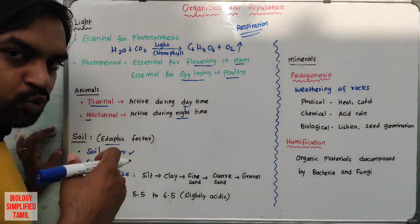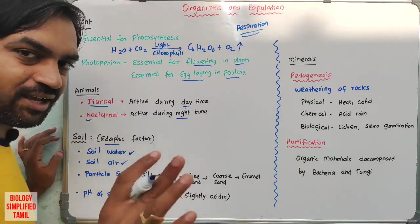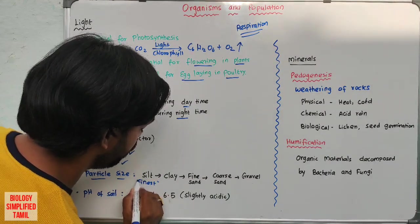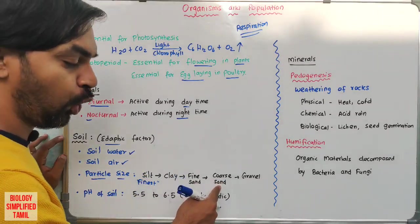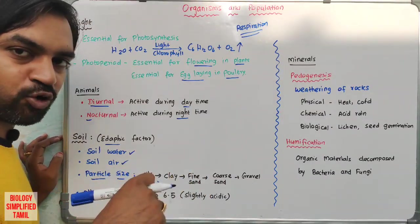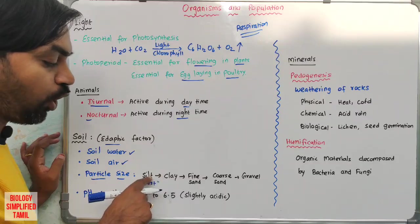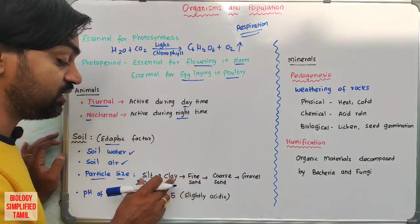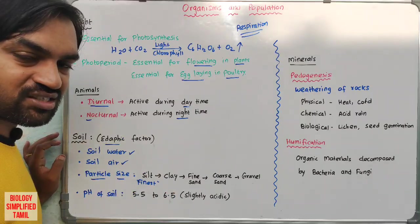Soil particle size is very important. The types from finest to coarsest are: silt, clay, fine sand, coarse sand, and gravel. In coarse sand there are many gaps. Silt and clay have high water holding capacity, while fine sand has lower water holding capacity. Water holding capacity is important for plant survival.